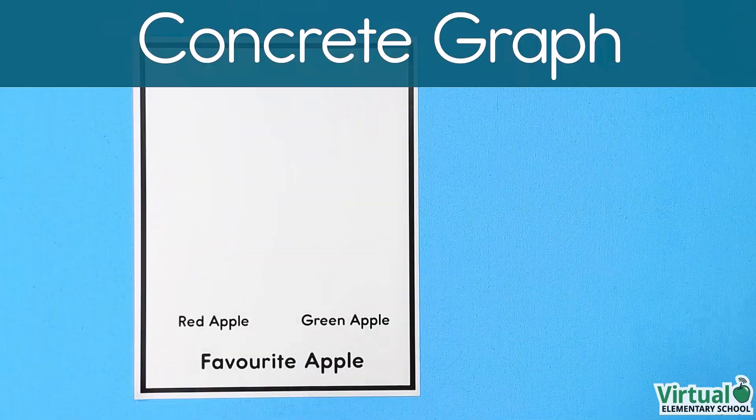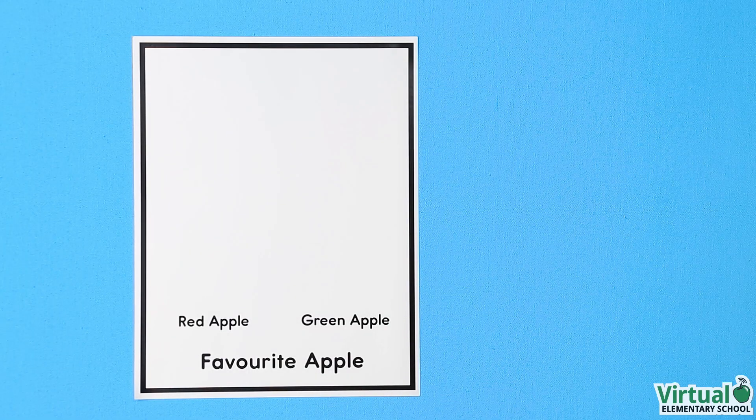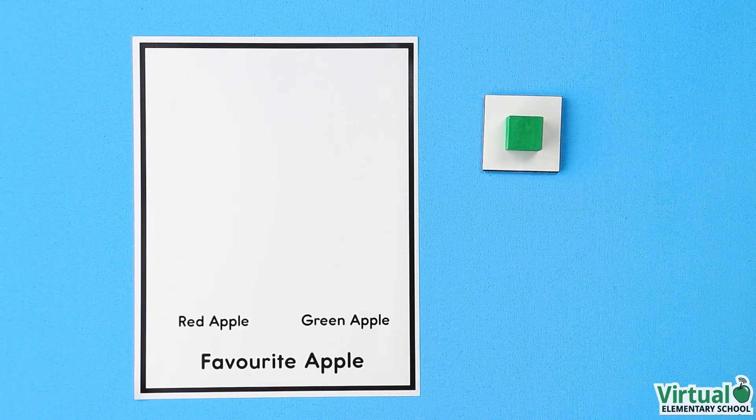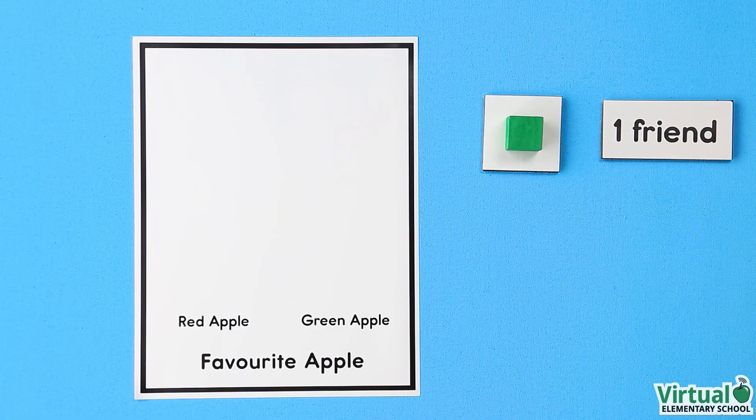Hanna is going to make a concrete graph. A concrete graph uses real objects to show data. Hanna is going to use blocks to make her graph. Each block will represent 1 friend.